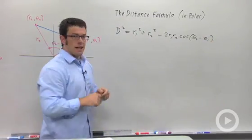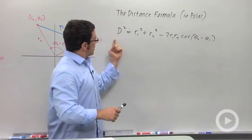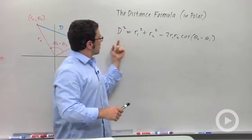That's it. That's the distance formula. Obviously, you'll take the square root of the result, but it's basically in the form of the law of cosines. We'll use this to find the distance between two points in polar coordinates.